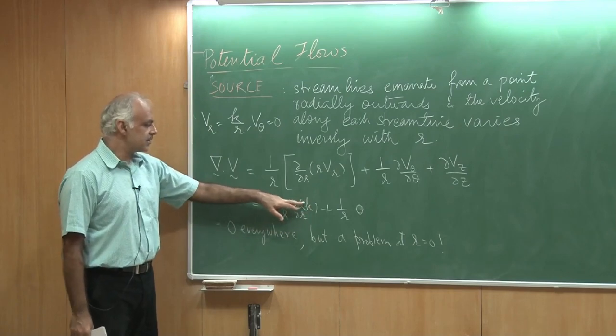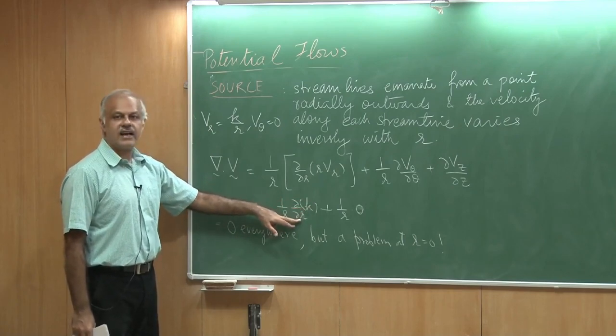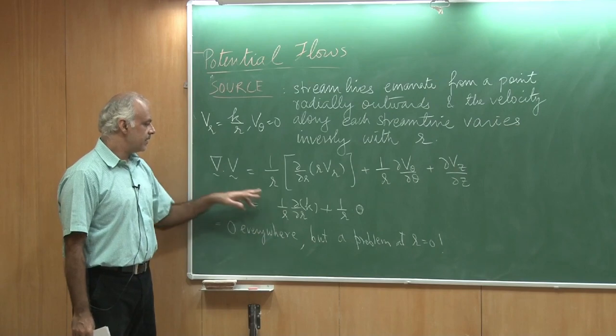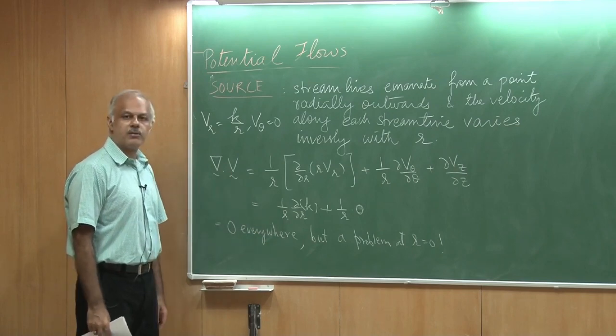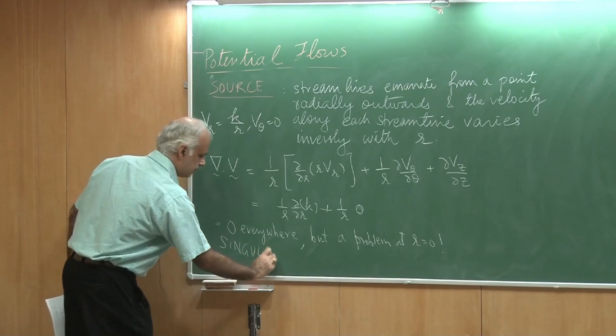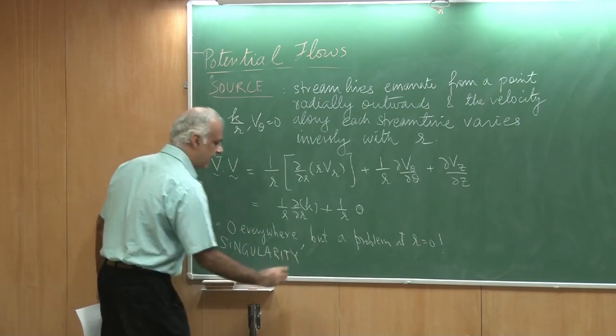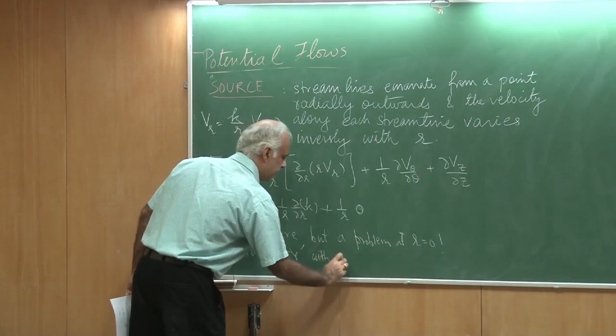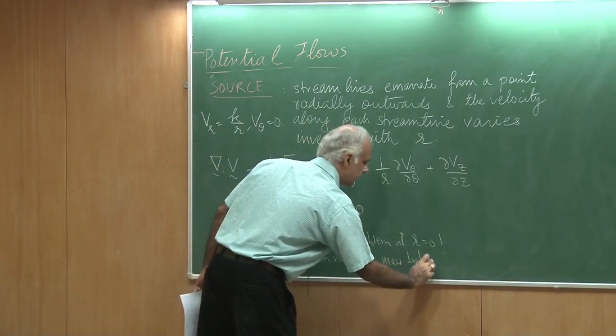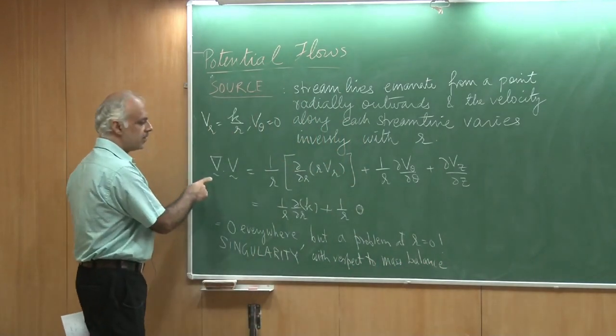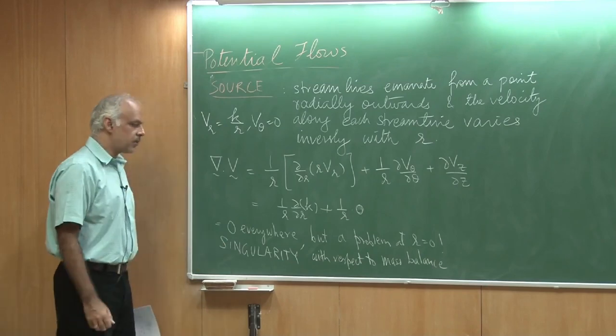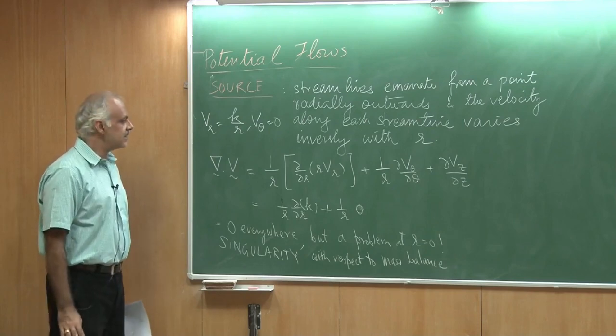In fact, this term would give me a problem at R equal to 0. Even though K is a constant, so del K del R is 0, but because it is divided by R, as I approach the origin, divergence of V is a problem at the origin. Therefore, this is some kind of a singularity with respect to mass balance. The divergence of V equal to 0 is the equation of continuity, which enforces the mass balance. What we are saying is that there is a problem at origin, but other than that, things are fine.